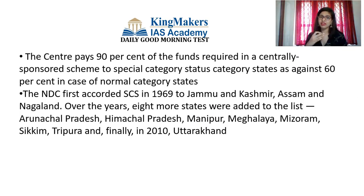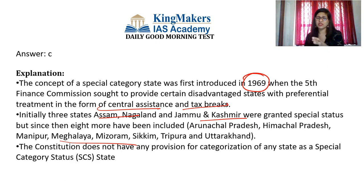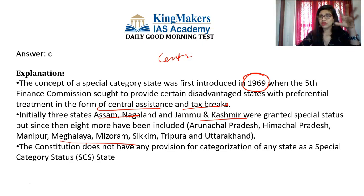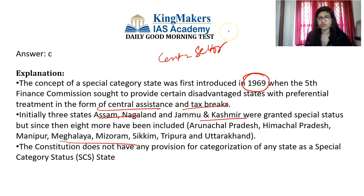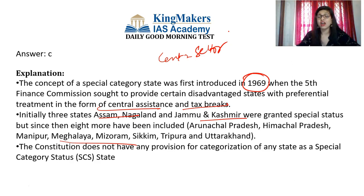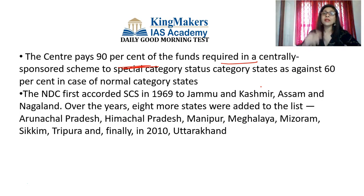The next question: the term 'Representative Concentration Pathway' was recently seen in news. What is it about? Option A: international north-south transport corridor; B: software tools for artificial intelligence; C: bitcoin regulations; D: greenhouse gas concentration. This is a straightforward question. The answer is option D — greenhouse gas concentration. A Representative Concentration Pathway is a greenhouse gas concentration trajectory, not an emission trajectory. It was adopted by the IPCC for its Fifth Assessment Report in 2014.